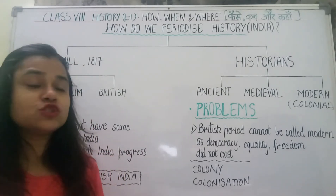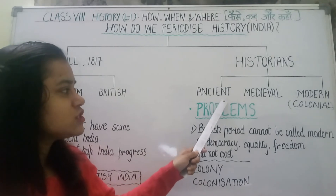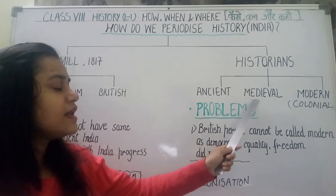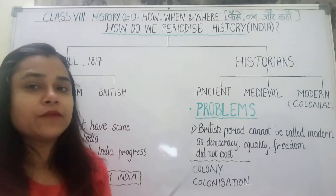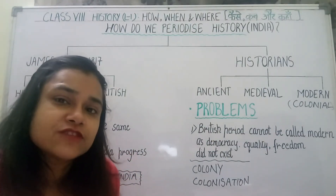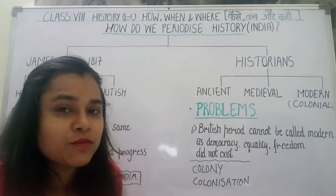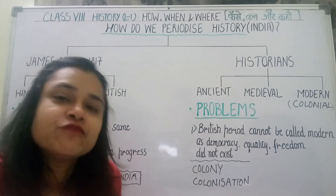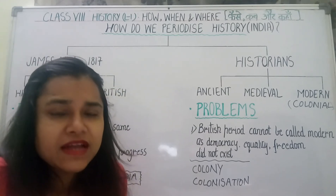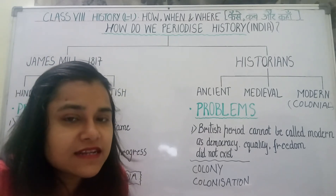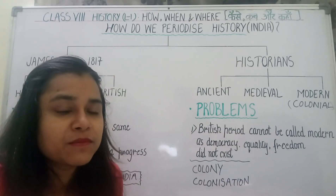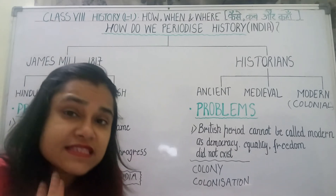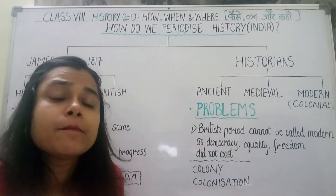Ab doosari classification — jo kuch historians ne ki — woh thi: Ancient, Medieval, and Modern. Yaani Praachin, Madhyakalin, aur Adhunik. Aap ko yaad hai, aapne Class 6th ki history padhi thi jab stone tools hote the aur bahut saari cheezein excavation karke milti thin — woh jo history thi woh thi Ancient Indian History. Class 7 mein job aapne Delhi Sultanate ke baare mein padha, Mughal rulers ke baare mein padha, woh thi Medieval History. Aur Class 8 mein jo aap padhenge woh hai Modern History.